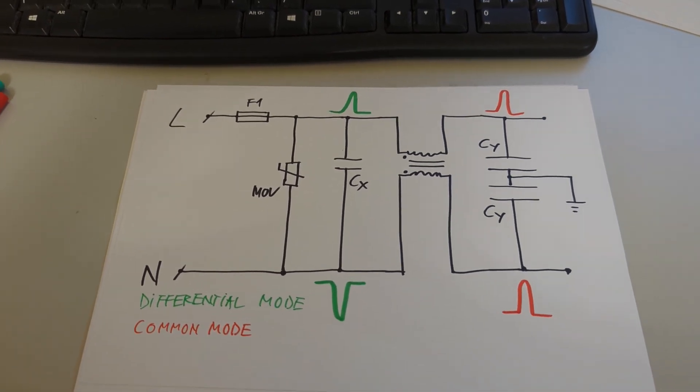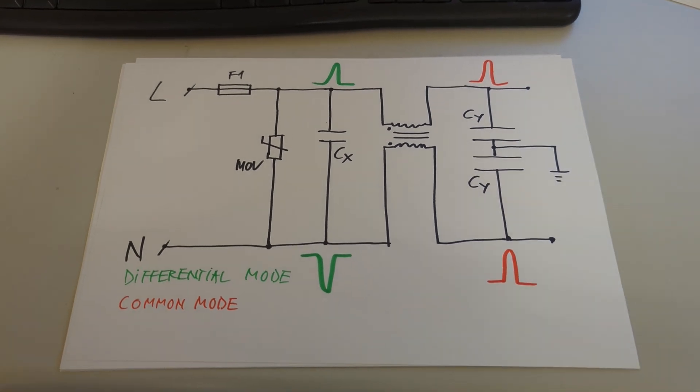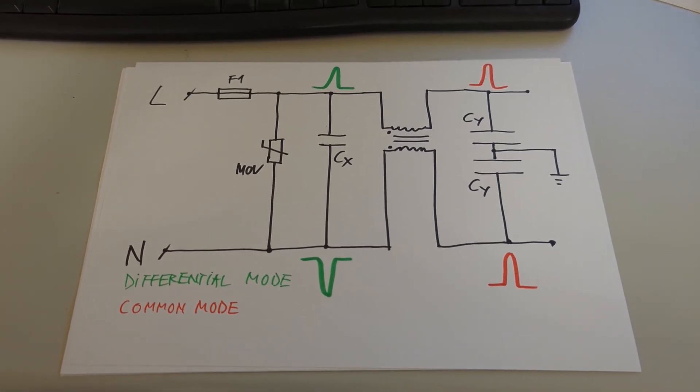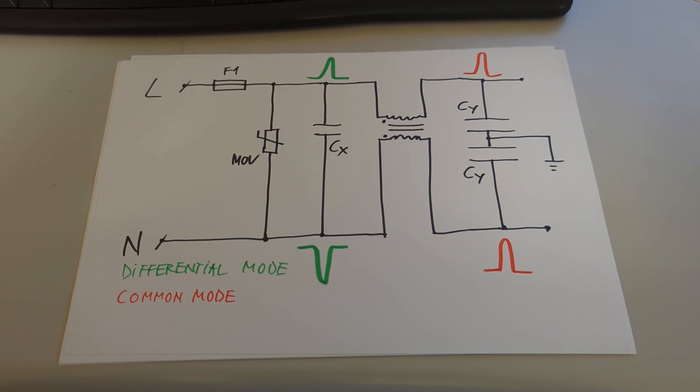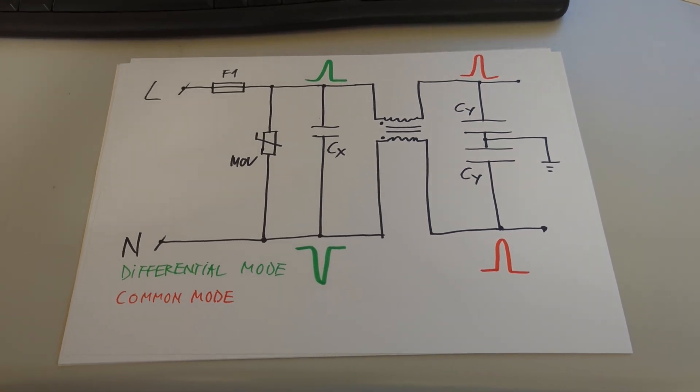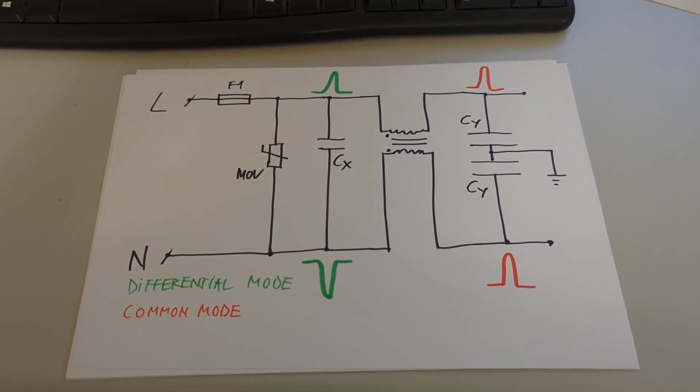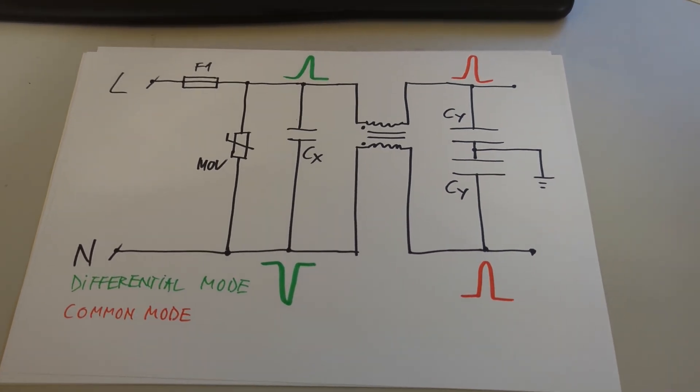And not only the mains are noisy, but the appliances that we use on mains voltage are also noisy. So what we do with these filters is basically we try to attenuate external noise from getting into our circuits and maybe changing its functionality. And we also try to avoid injecting noise from our appliances into the mains. So this is why such a filter is for.